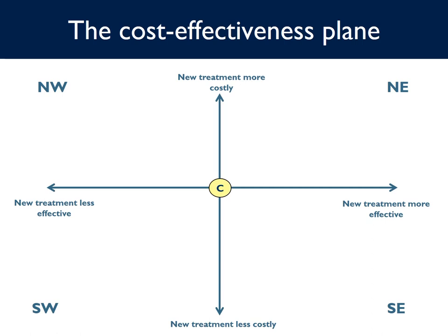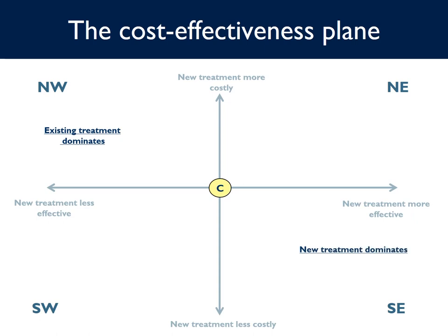There are four alternative scenarios where the new treatment might be located, corresponding to the four quadrants of the graph. The first two are the most clear-cut. The new treatment might be in the northwest quadrant — more costly and less effective — or in the southeast quadrant — less costly and more effective. In these two quadrants the decision is easy: either the new treatment dominates and should be implemented if it's in the southeast quadrant, or it is dominated by the existing treatment in the northwest quadrant and should not be implemented.